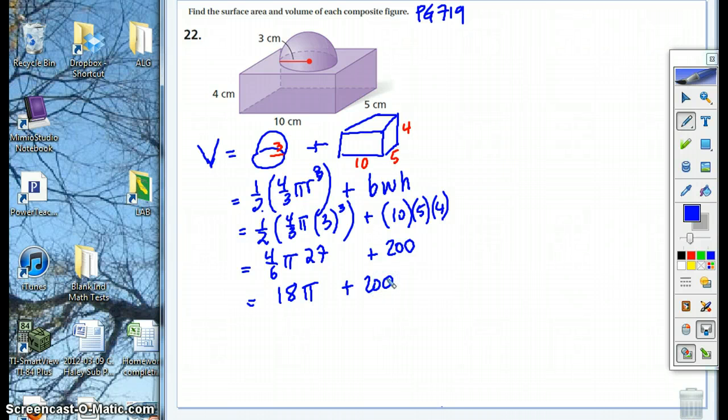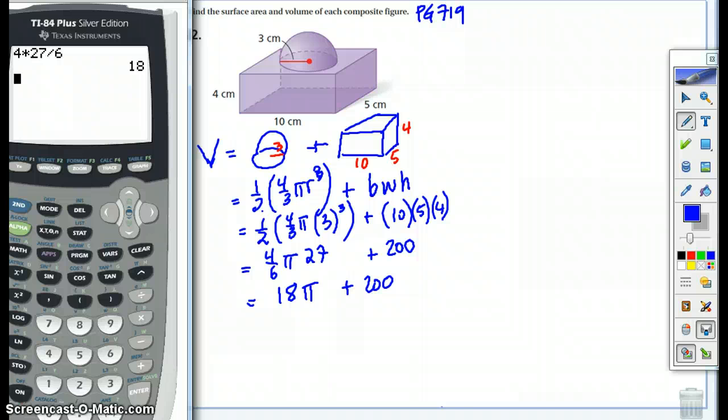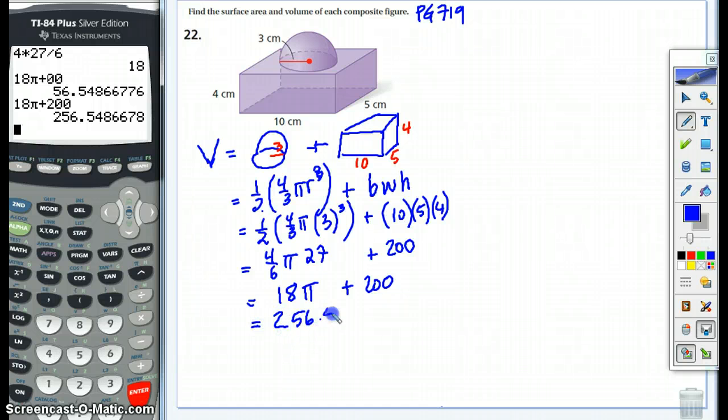So just remember here, you can't actually combine the 18 pi and the 200 because this would need a pi if you were going to do it. This would be like 18x plus 200. You wouldn't be able to combine 18x and 200. You can't combine these. So let's go ahead and do some calculations now. So let's do 18 pi plus 200. And so the correct answer here for the volume is 256.5. And these are centimeters cubed because it's volume.